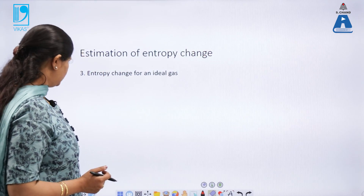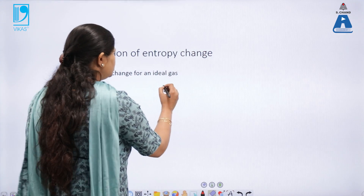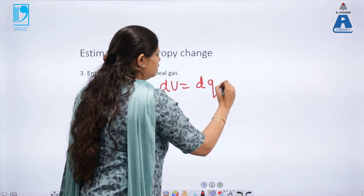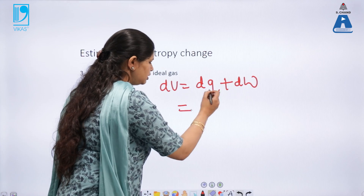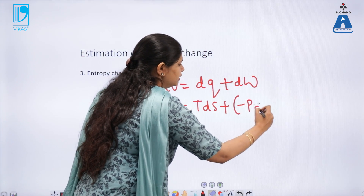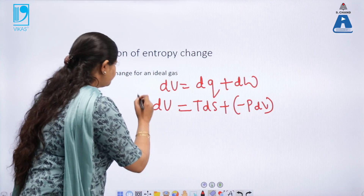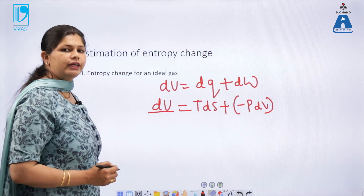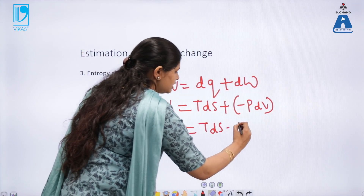The most important relation comes for an ideal gas. For an ideal gas, from the first law: dU equals dQ plus dW, and from the second law we have dQ equals T dS and dW equals minus P dV, giving us dU equals T dS minus P dV. Since dU can also be represented in terms of heat capacity as Cv dT, we write Cv dT equals T dS minus P dV.